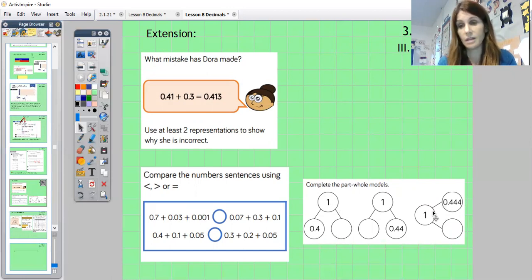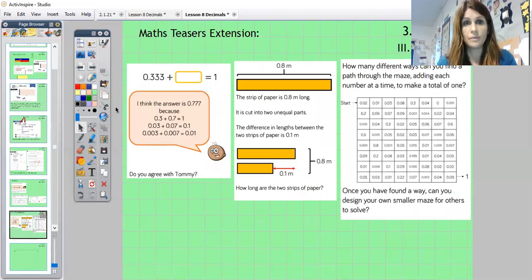And it's shown just in a slightly different way round, but this is the whole, what would the parts be? What would go with this to make this? So whatever goes with this goes in here to make this whole. And then maths teasers group, you have got a number add what equals one, so numbers to one. And then Tommy says I think the answer is 0.777 and then he gives his reasoning for it, so you have to say do you agree with Tommy?